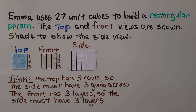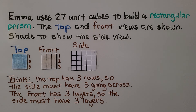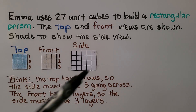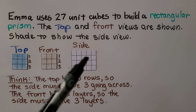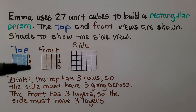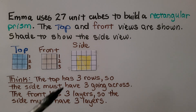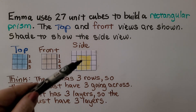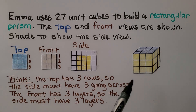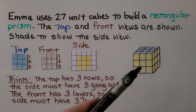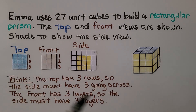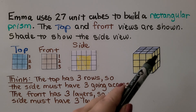Emma uses twenty-seven unit cubes to build a rectangular prism. The top and front views are shown — shade to show the side view. We can see the top has three rows, so the side must have three going across. The front has three layers, so the side must have three layers. So we've got three going across and in three layers.